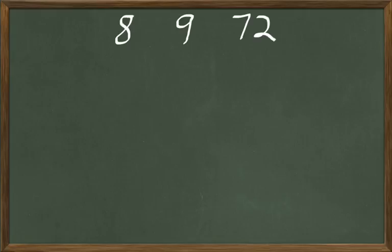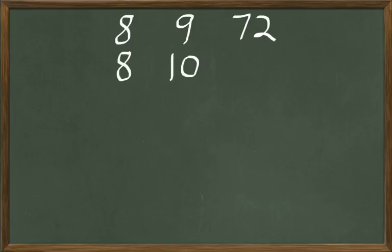One more problem to wrap things up today. I need a new comb — the price of a comb is 10 cents. I want to stock up on combs so I'm going to buy 8 combs, each costing 10 cents. How much will those 8 combs cost? We're going to multiply 8 times 10 because each comb costs 10 cents and I'm buying 8 combs — 10 cents is being multiplied 8 times. 8 times 10 is 80, so I've got to pay 80 cents for 8 combs at 10 cents apiece.